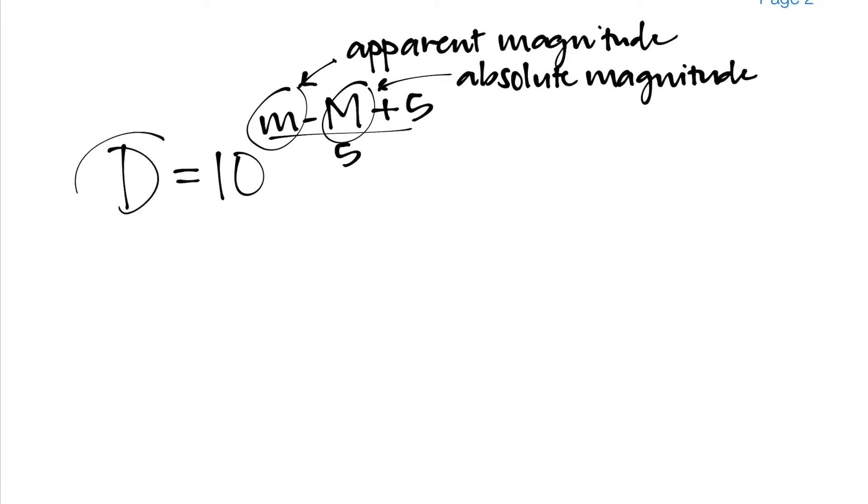And the last variable in this equation is the variable D itself, which represents the distance in units of parsecs. So we are always going to be using the variable D in units of parsecs, which is abbreviated as pc in our calculations. This is one format that the distance modulus can be given in.